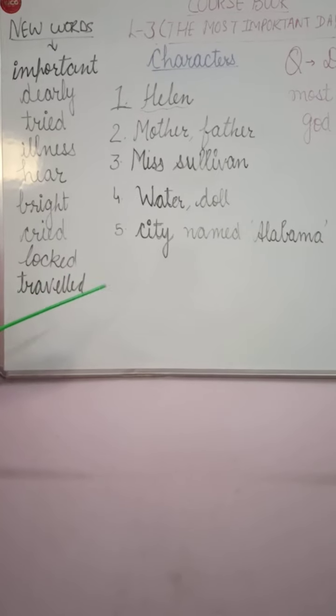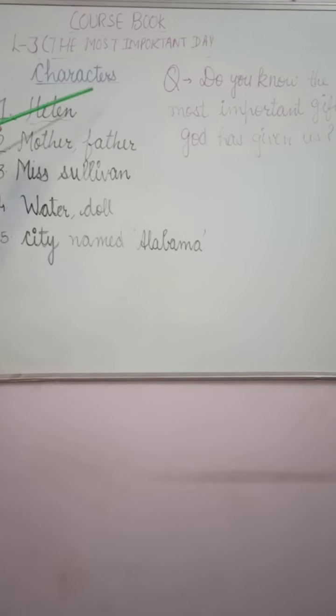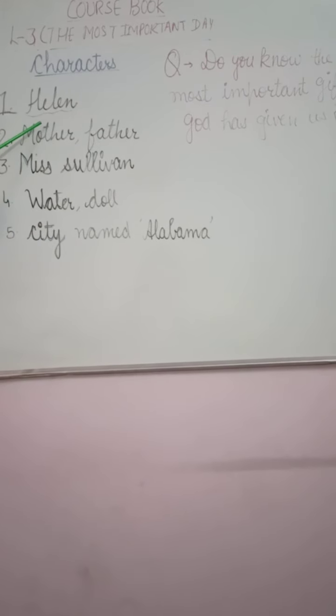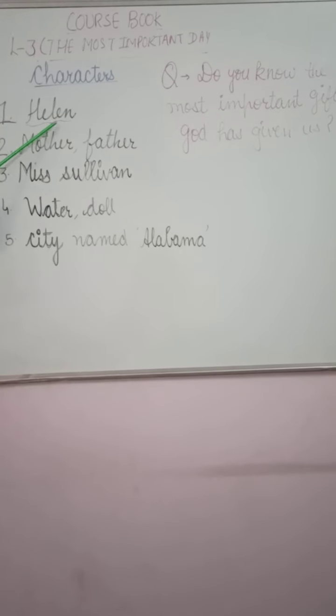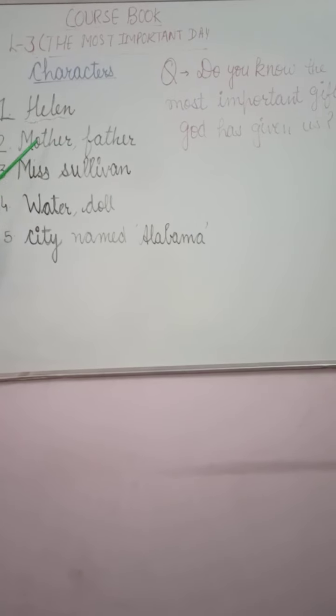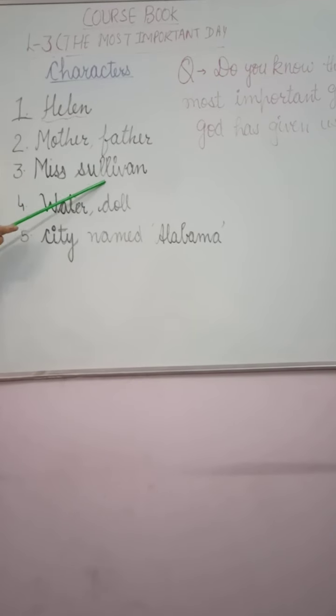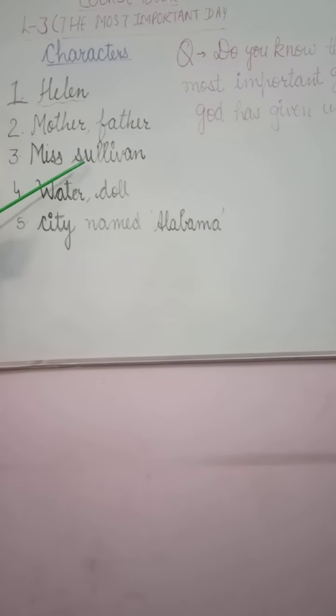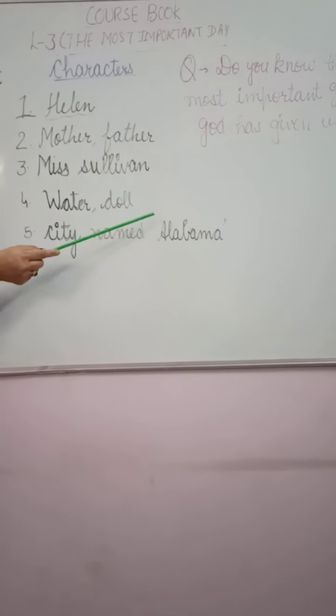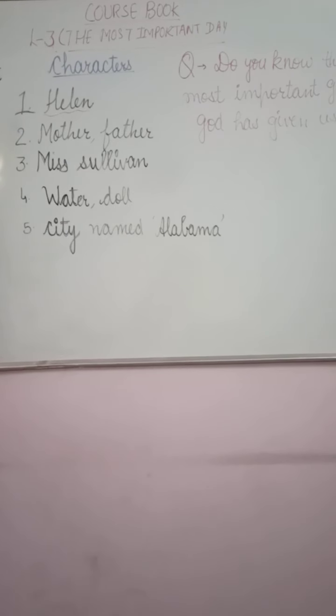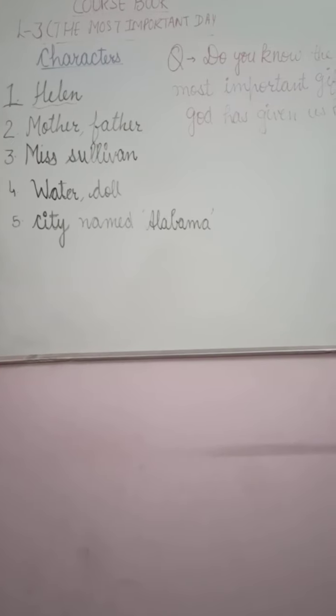Later we will find more new words in the chapter. I will discuss those words side by side. Now come to the main characters of this chapter. Number 1 is Helen. Helen is the girl, the main character of the chapter on which the story is based. Next is her mother, then Helen's father, Miss Sullivan, Helen's teacher, water doll, city name Alabama. She belongs to the city named Alabama. These are the main characters which we will find in this chapter.